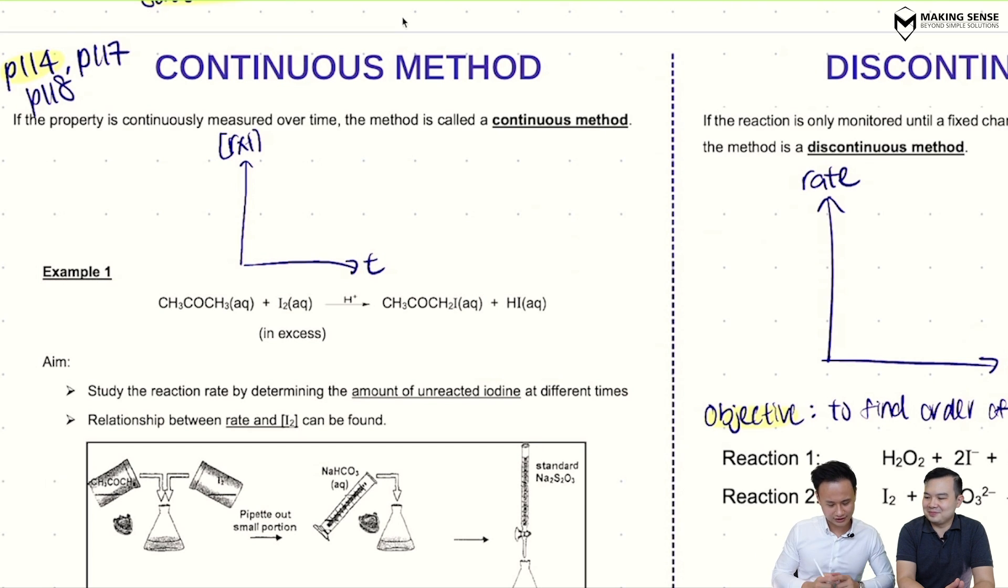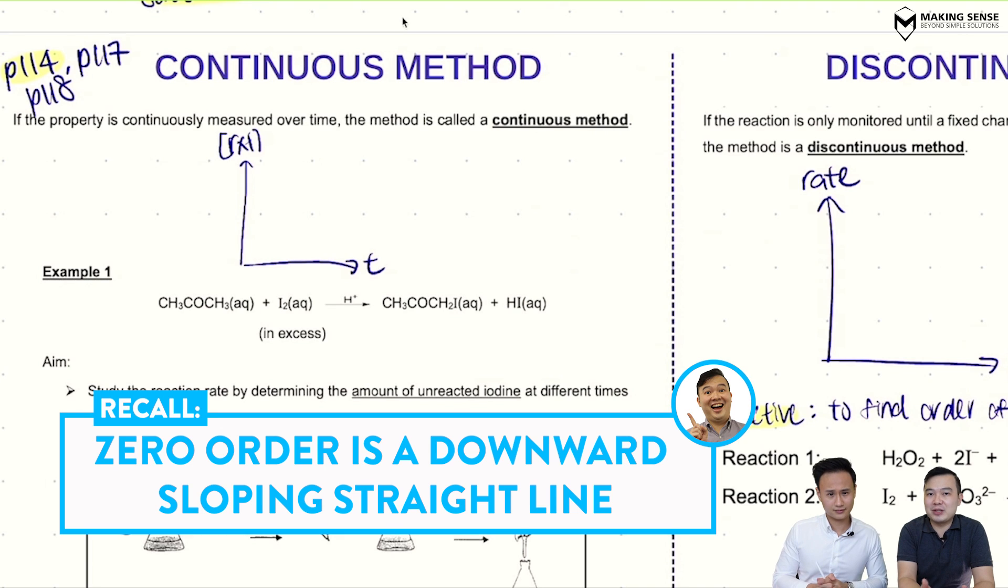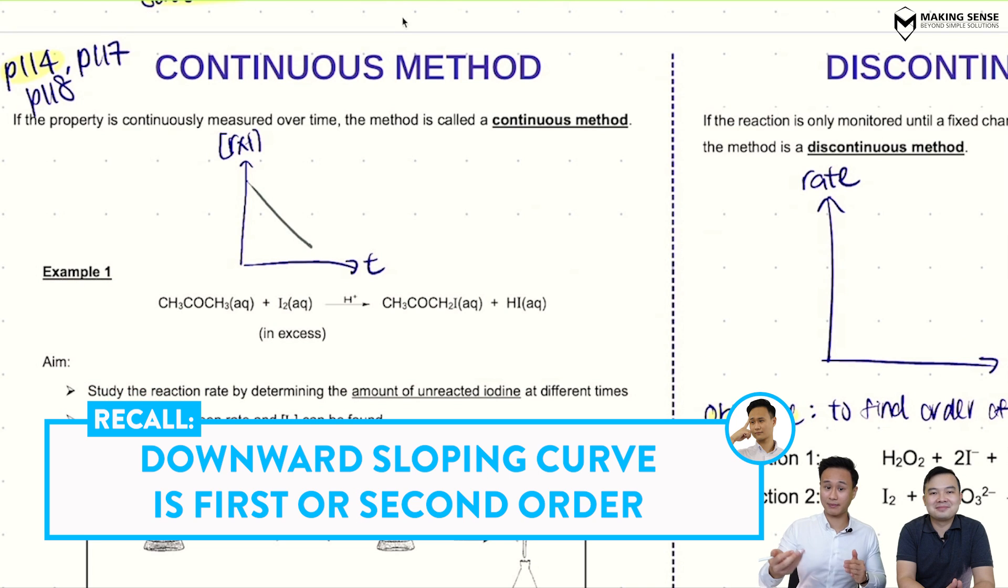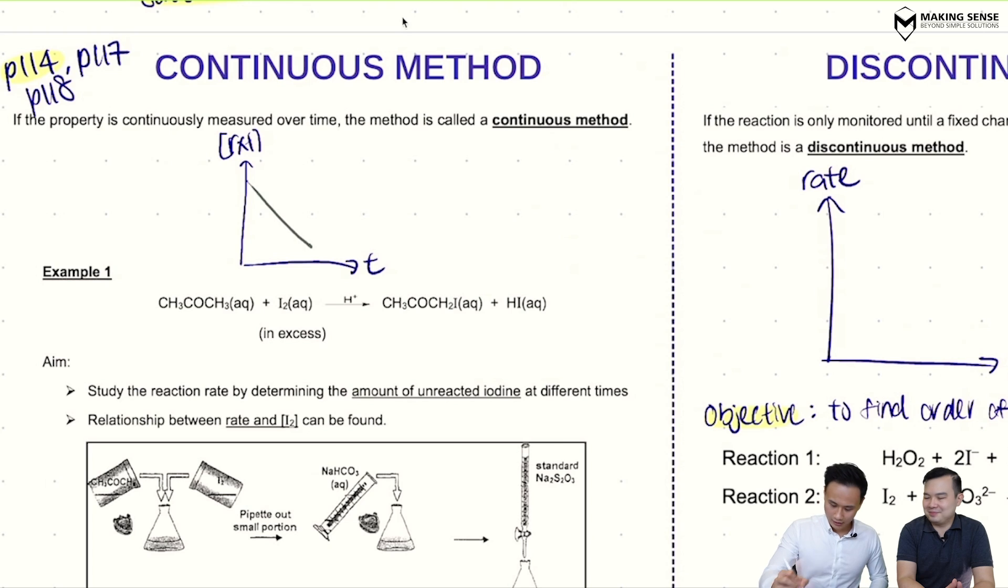Depending on the shape of this curve, if it's zero order, how does this shape look like? So reactant versus time graph must always be decreasing. If it's zero order it'll be a downward sloping straight line. And likewise, a curve, a downward sloping curve, is either first order or second order.